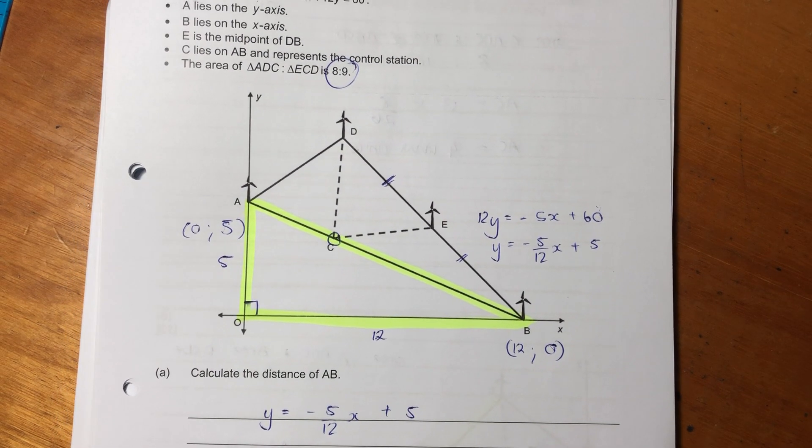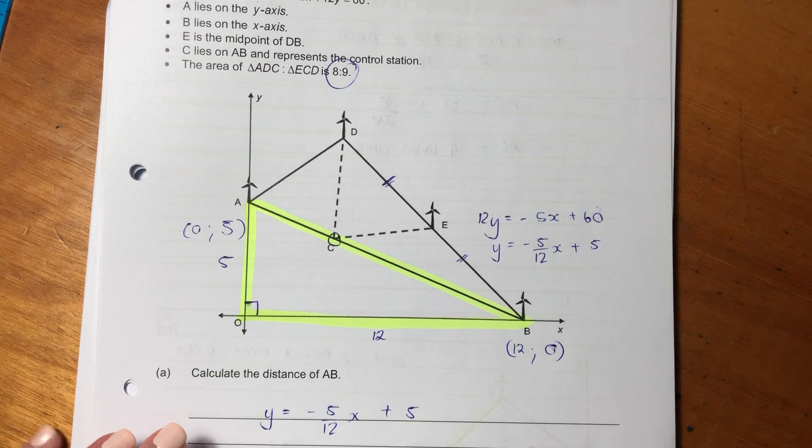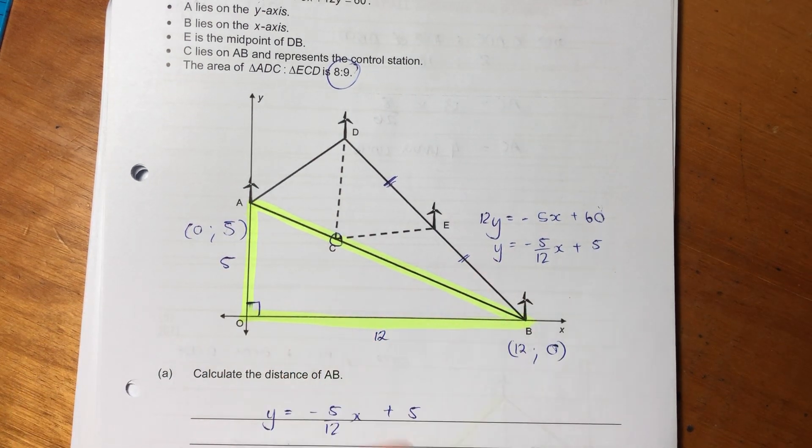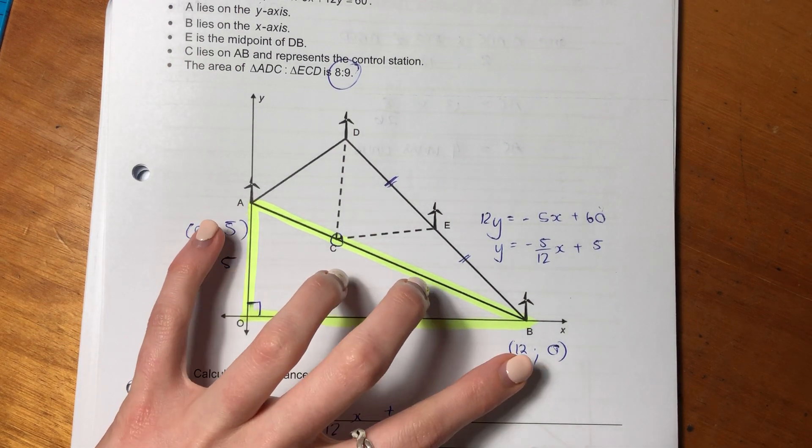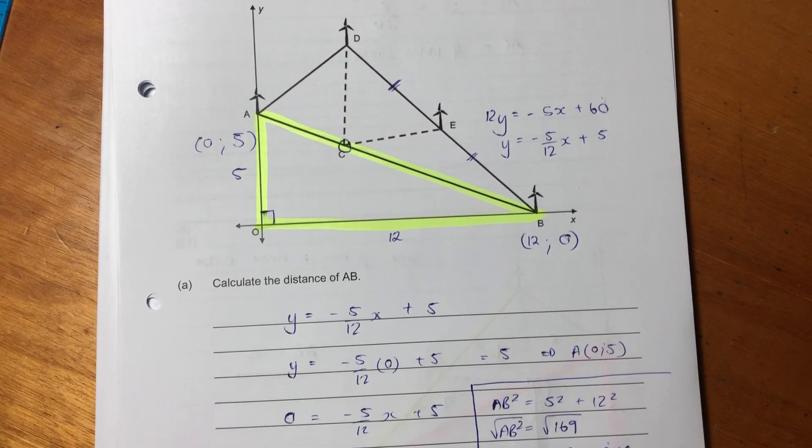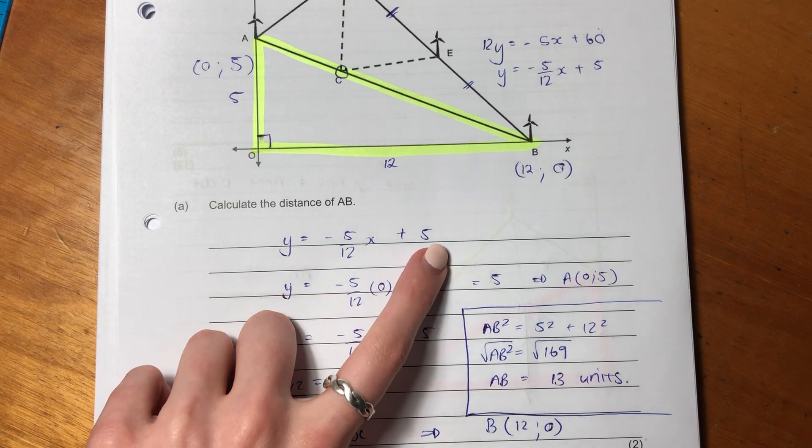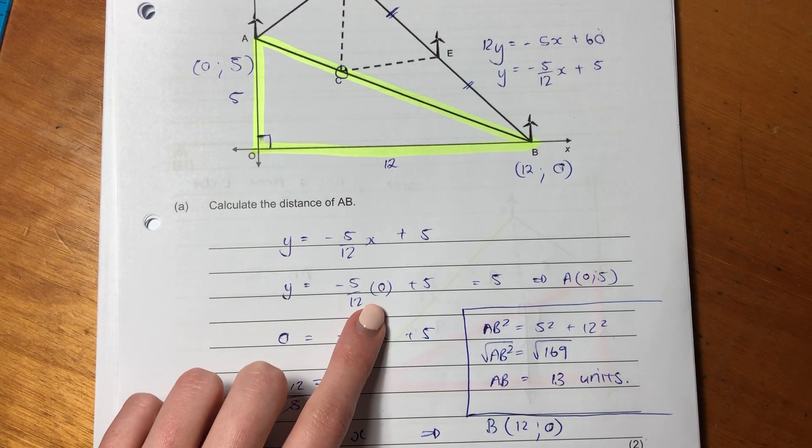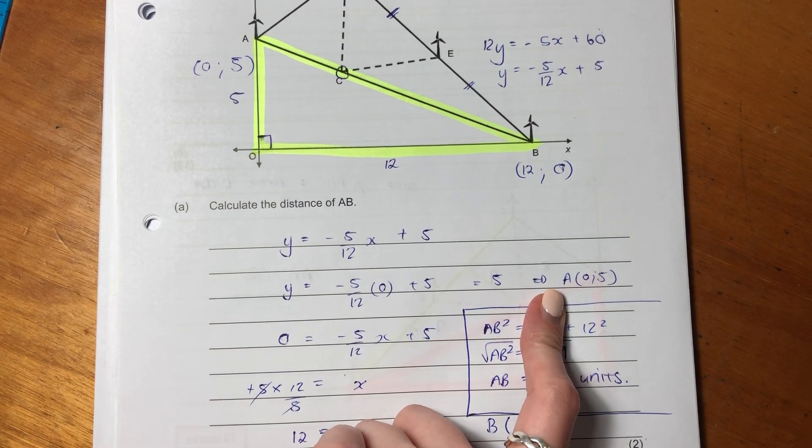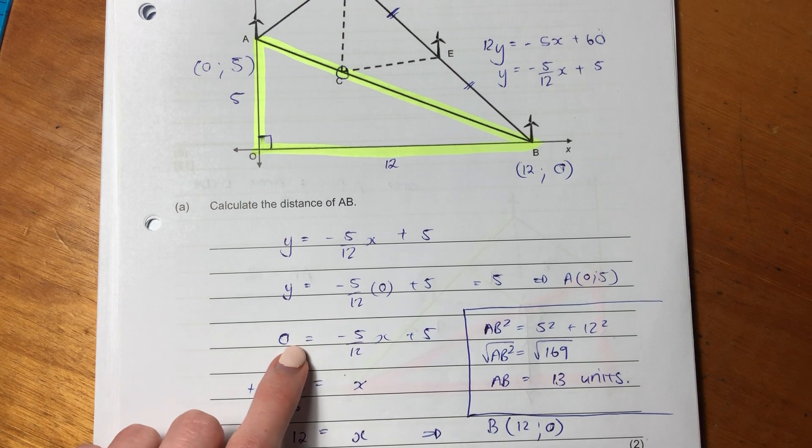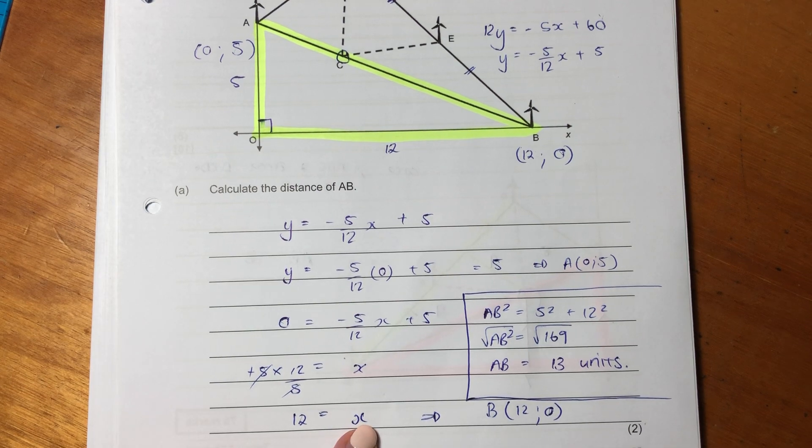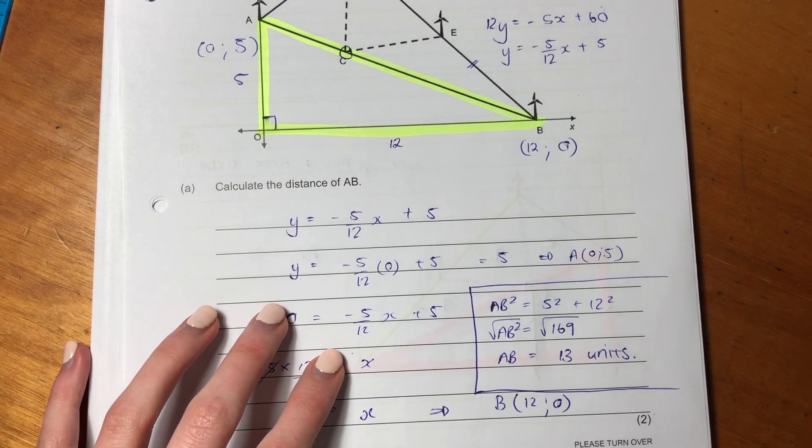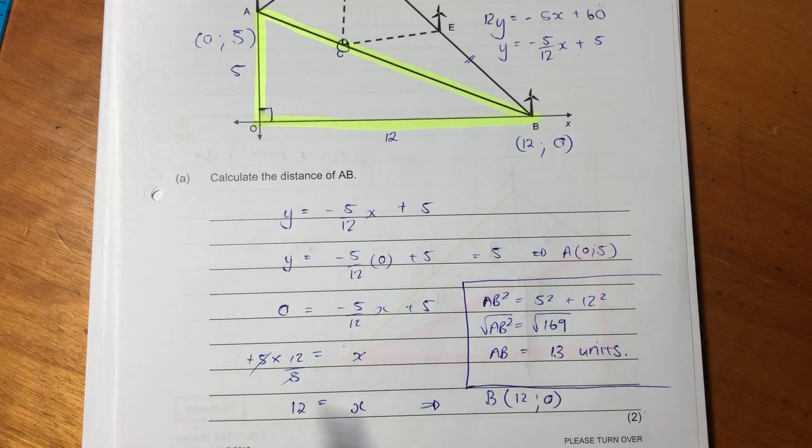But let's just first see what they want. It says calculate the distance of AB. Now, AB is that line there. We know that AB, both of those points, lie on this y equals mx plus c line. So what we're going to do is we're going to work out the intercepts, and then what we're going to do is we're going to find that length. So how did I find the intercepts? Well, what I did is I said, the intercept, the y intercept is easy. You can just read it off, or you can sub in x equal to 0. You get the point of A, 0 and 5. You similarly do it for x, but when you're finding the x intercept, you make y equal to 0. You solve x equals 12. Important to make sure that you do algebra correctly. And B equals 12 and 0. So now we have these two points.